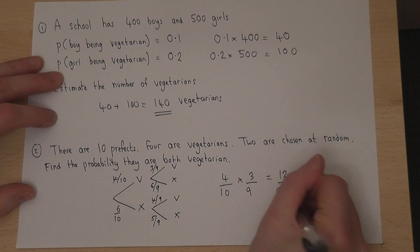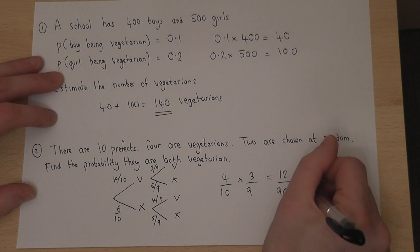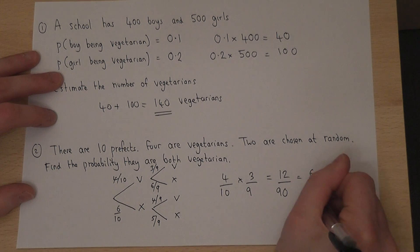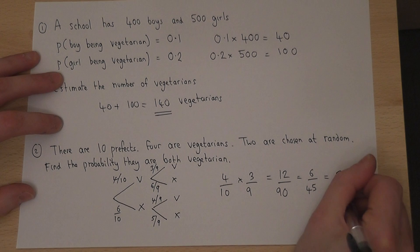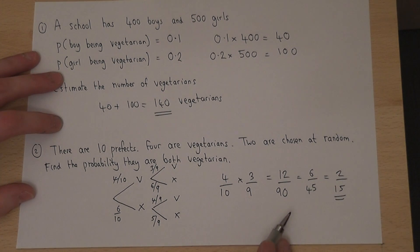and 10 times 9 is 90. This will cancel down to 6 over 45, which cancels down further to 2 over 15. So the chance that both the prefects chosen are vegetarian is 2 out of 15.